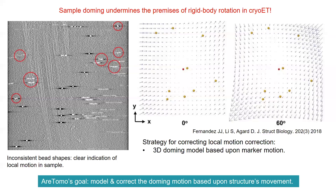We are working diligently to model and correct the doming motions within the RTOMO context. Our goal is to correct local motions based upon structure movement, because our alignment scheme does not rely on gold beads.